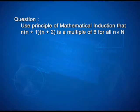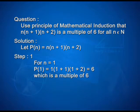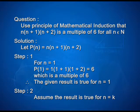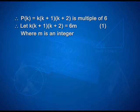Let us take one more interesting example. Use the principle of mathematical induction to prove that n(n+1)(n+2) is a multiple of 6 for all n belonging to natural numbers. Here you are supposed to frame the statement: let p(n) be n(n+1)(n+2). For step 1, n=1: p(1) equals 1×2×3, which is 6, obviously a multiple of 6. Therefore the given result is true for n=1. In step 2, assume the result is true for n=k. Therefore p(k) equals k(k+1)(k+2) is a multiple of 6, so let k(k+1)(k+2) equal 6m. Take this as equation 1, where m is an integer.